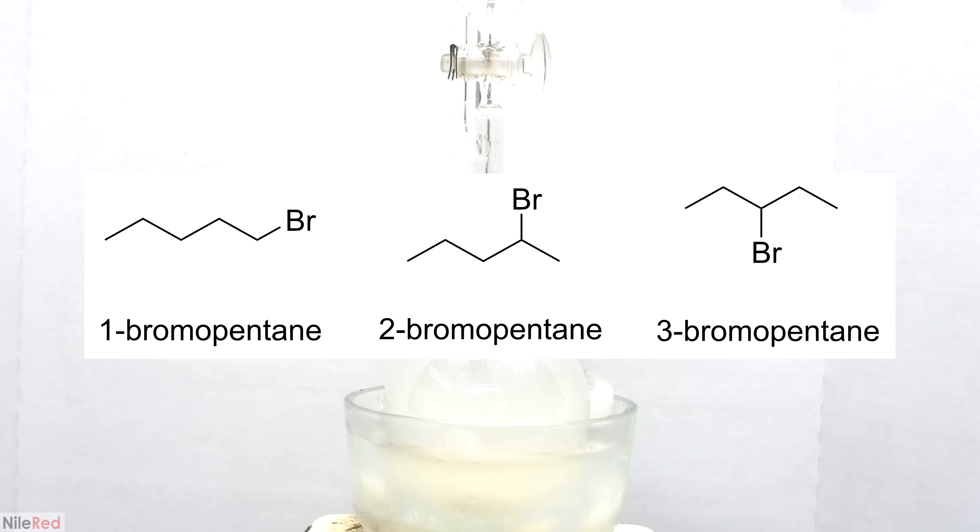It's specifically called 1-bromopentane, and not just bromopentane, so that we know exactly where the bromine is on the pentane molecule. If we were to move the bromine atom to a different carbon, the name could change to something like 2-bromopentane or even 3-bromopentane.